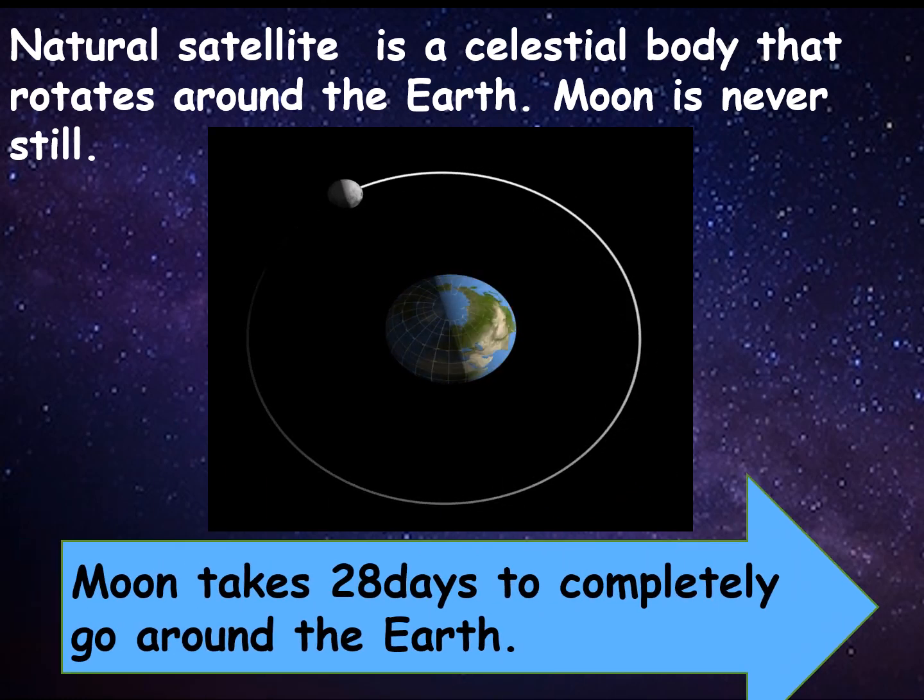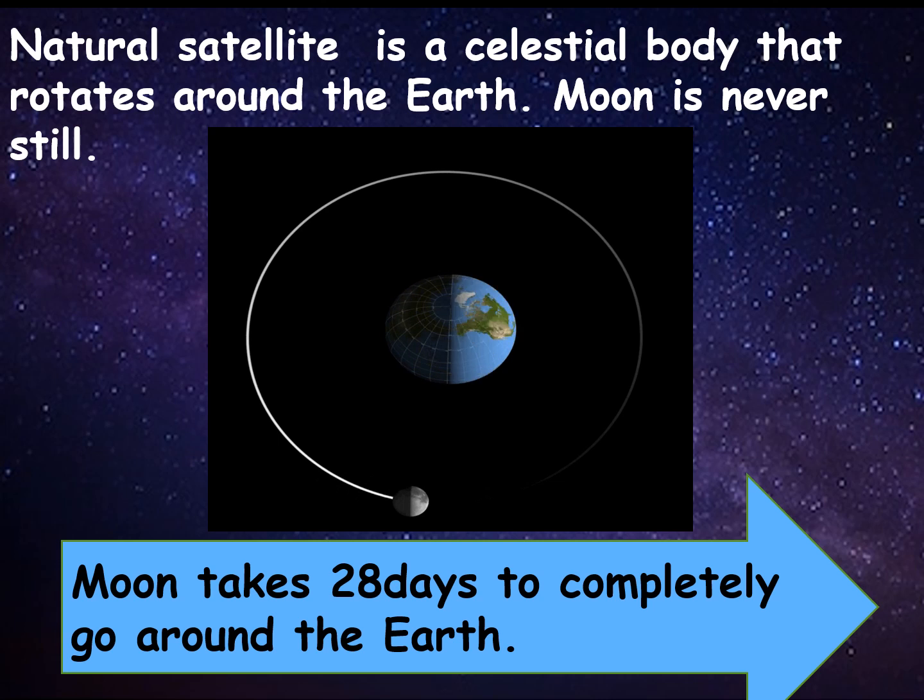Moon takes 28 days to completely go around the earth. How many days children? Yes, you are right. 28 days.